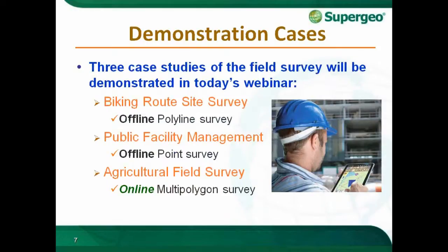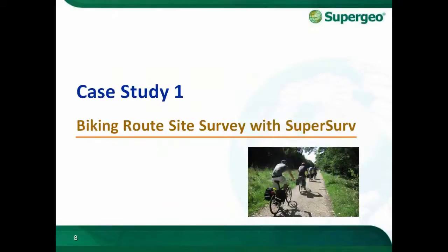In today's webinar, we are going to demonstrate three case studies of field survey. Number one is the biking route site survey, where we demonstrate offline polyline survey. The second part covers public facility management with offline point survey. The final part is the agriculture field survey, demonstrating online multipolygon survey.